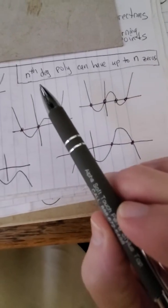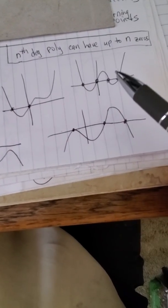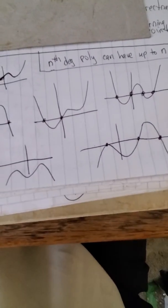A fifth-degree can hit it up to five times. A third-degree can hit it up to three times. A fourth-degree polynomial, as we see from these pictures, can hit the x-axis up to four times. And when a polynomial hits the x-axis, we call that a zero of the polynomial.